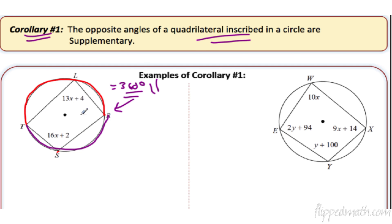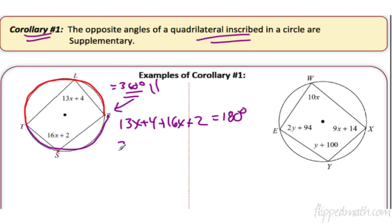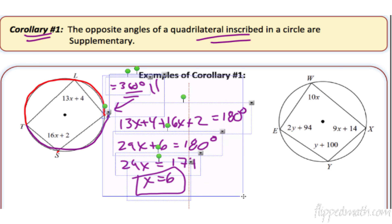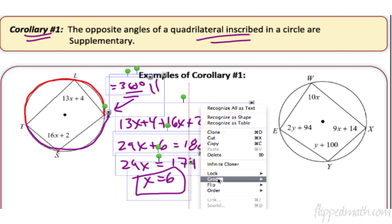So if you have a quadrilateral with opposite angles supplementary: 13x plus 4 plus 16x plus 2 equals 180 degrees. Add those together: 29x plus 6 equals 180. Subtract 6 from each side — 29x equals 174 — and x equals 6. They might ask you for an angle too, so you'd plug it back in.